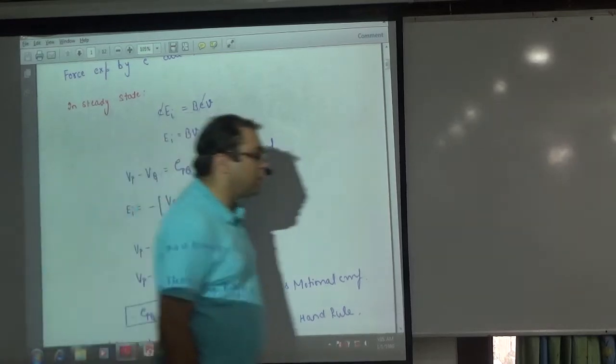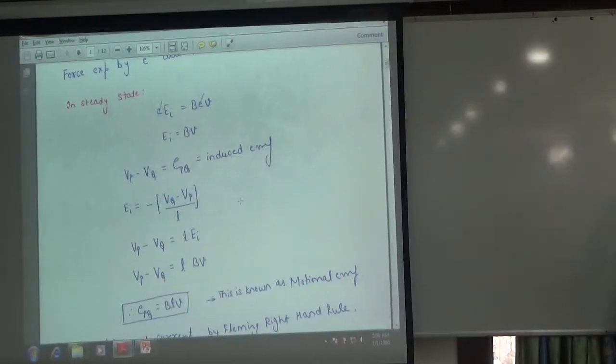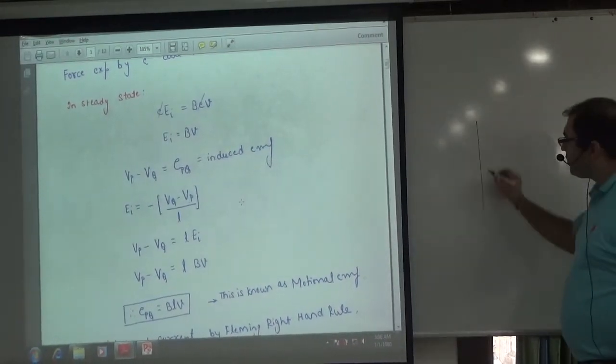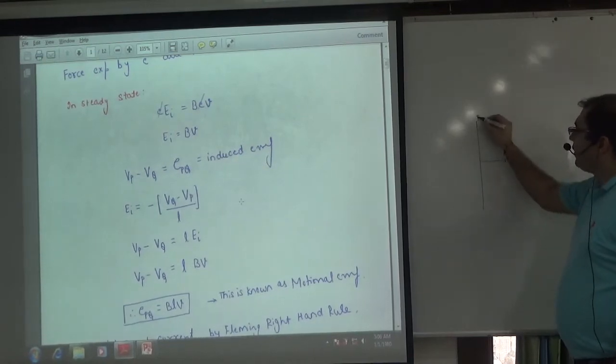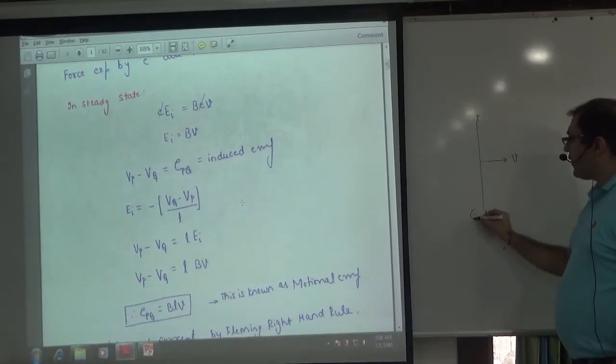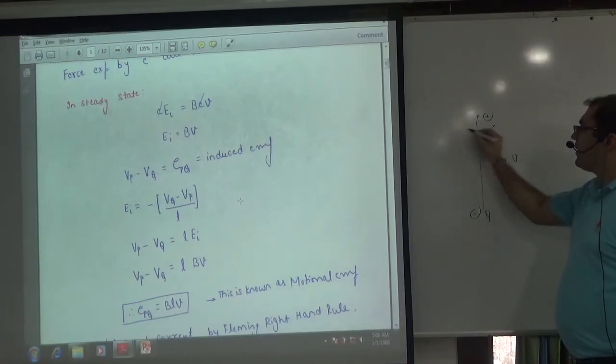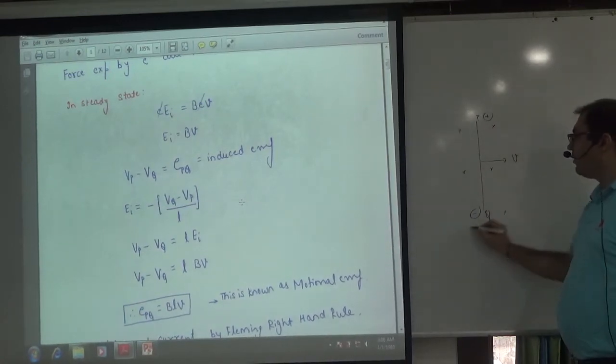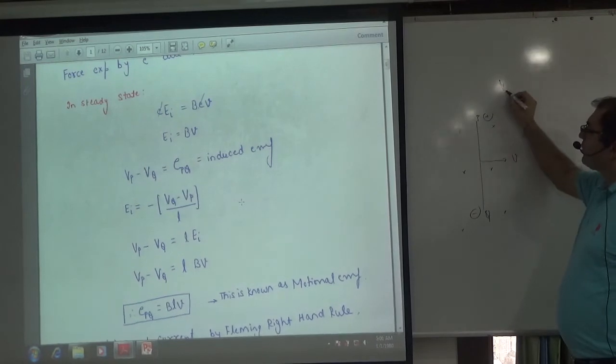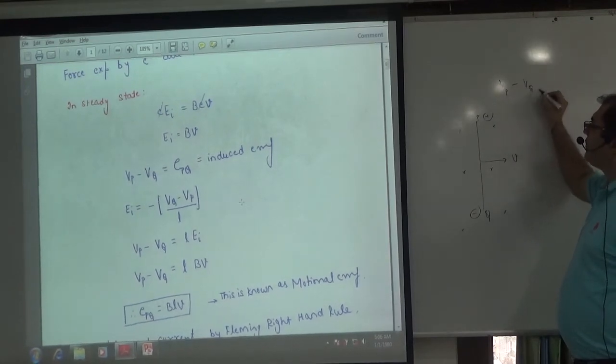Now, because this rod is moving towards the right with velocity V, this is P point, this is Q point, this is negative, this is positive. Magnetic field is present in the board. Then what will happen? Positive potential is high and negative is low.